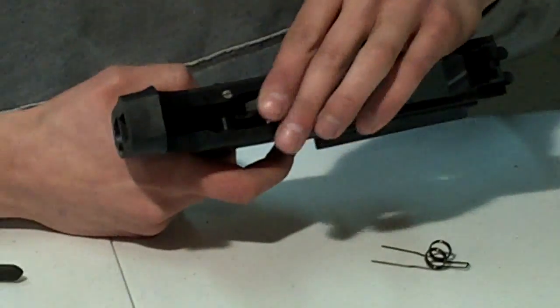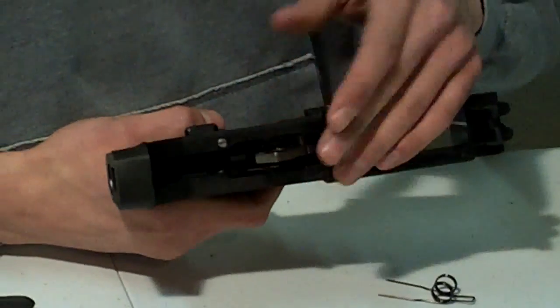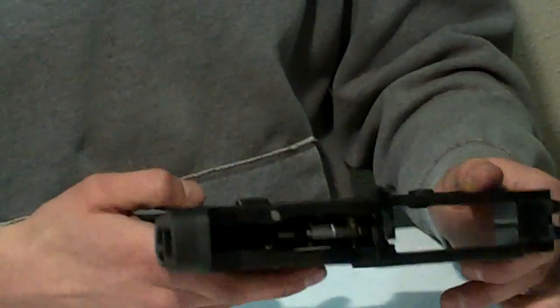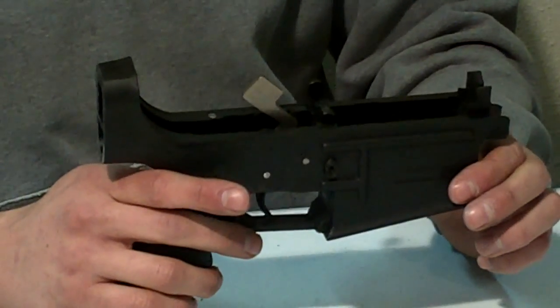Then you want to make sure that your safety works correctly. Make sure it goes into the safe. And make sure you cannot pull the trigger. And after that's done, you're ready to reassemble your gun.